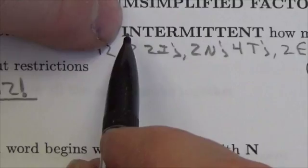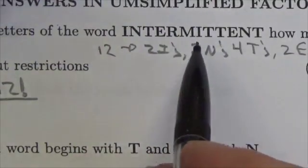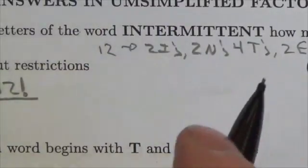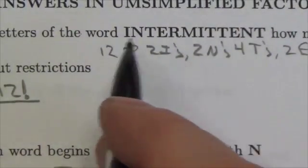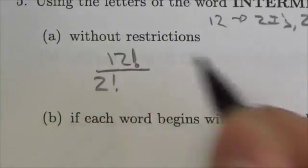like right now, if I was to swap these two I's, you wouldn't notice a difference. So there are two factorial ways I can do that, but that creates these two different groups of permutations that are going to look identical to each other. So what I'm going to do is I'm going to divide by two factorial.